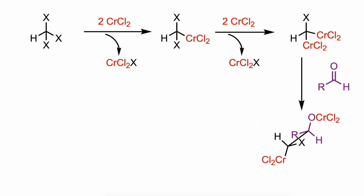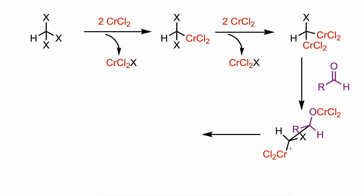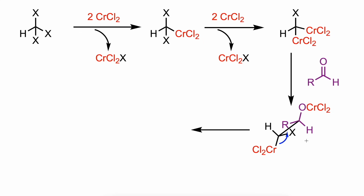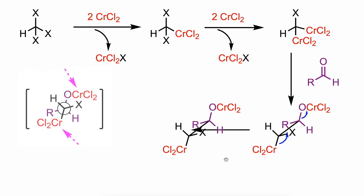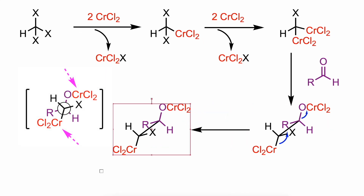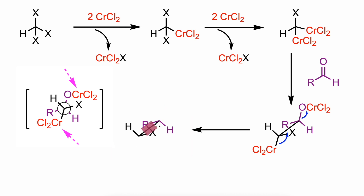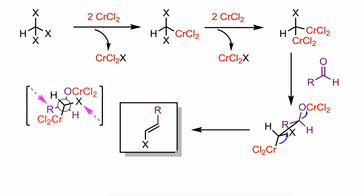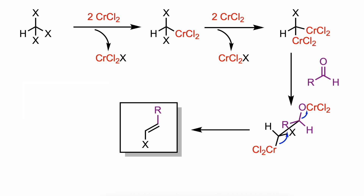Finally, both chromium-bearing groups engage in an elimination step. In the Newman projection, it can be seen how the steric bulk of the chromium groups and the steric bulk of the alkyl and halogen groups drive the reaction towards the anti-elimination.